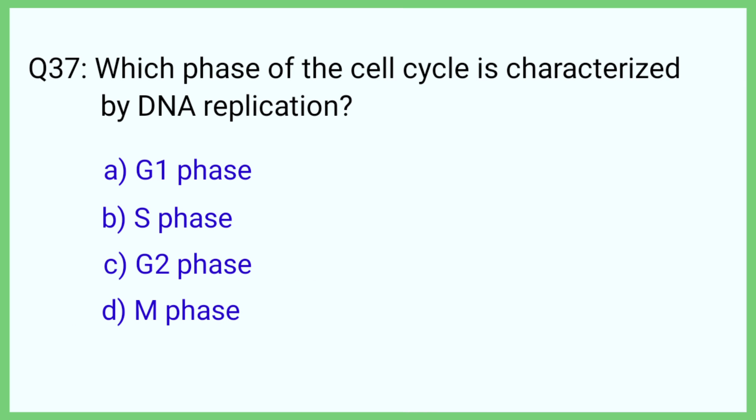Question number 37. Which phase of the cell cycle is characterized by DNA replication? The correct answer is option B: S phase.